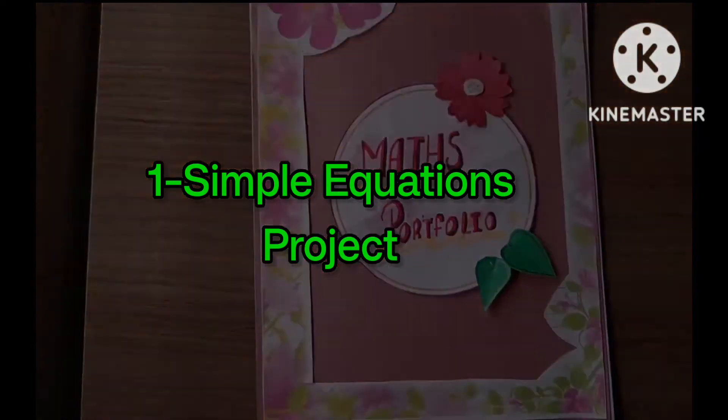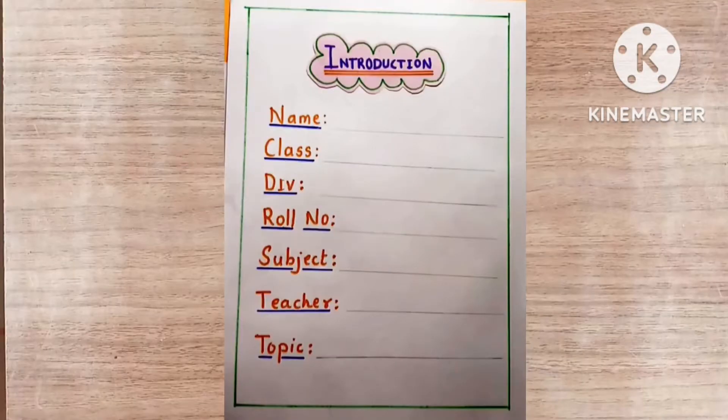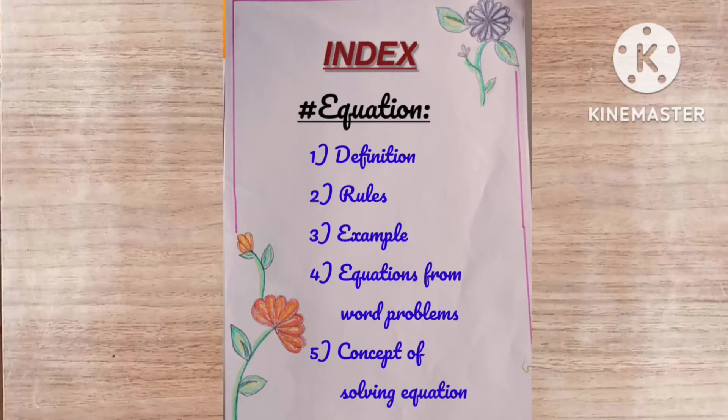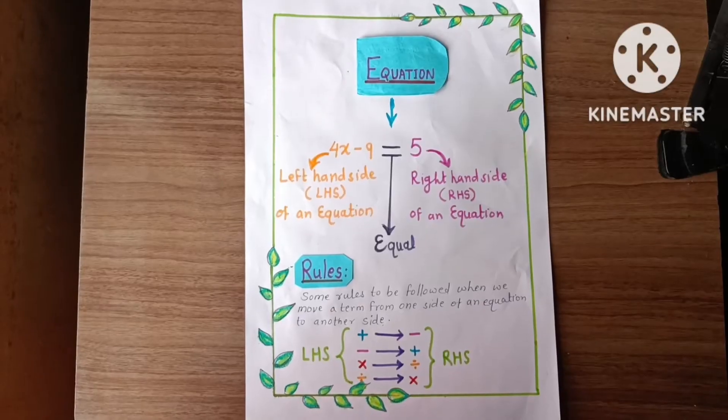Let's see the inside pages. The next page is introduction: name, class, division, role number, subject, teacher, and topic. The next page is the index with equation topics: number one definition, number two rules, number three example, number four equation from word problem, and number five concept of solving equation.